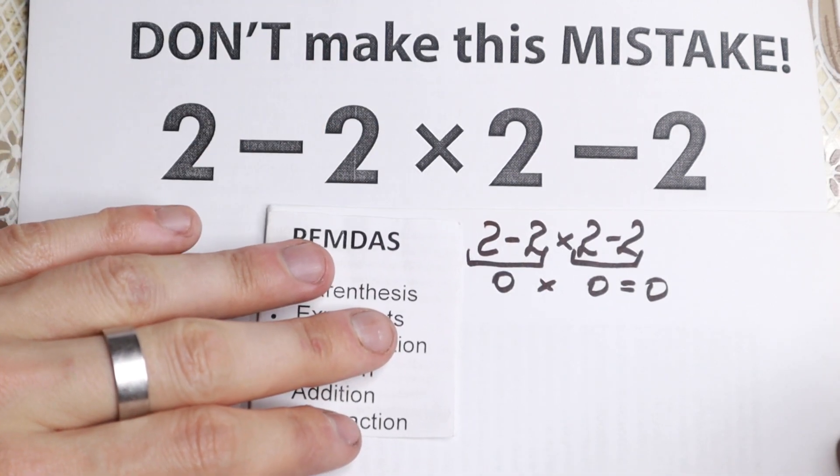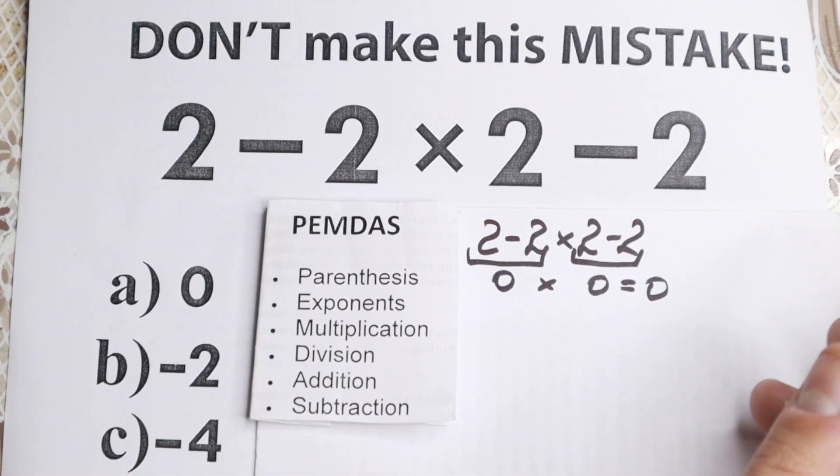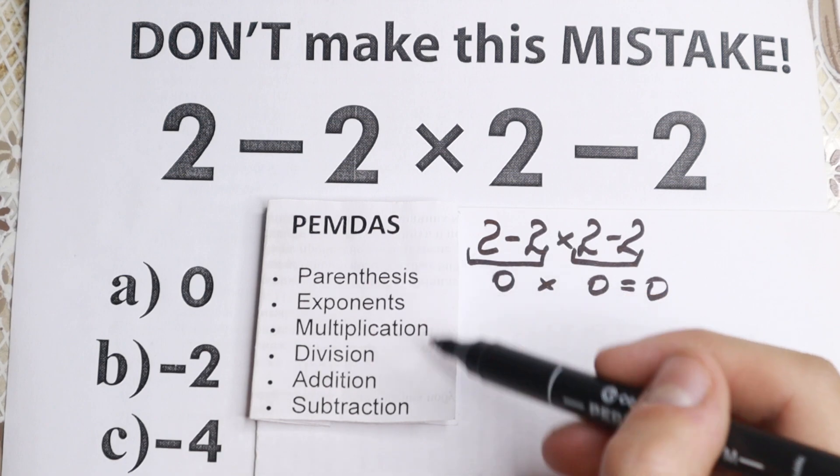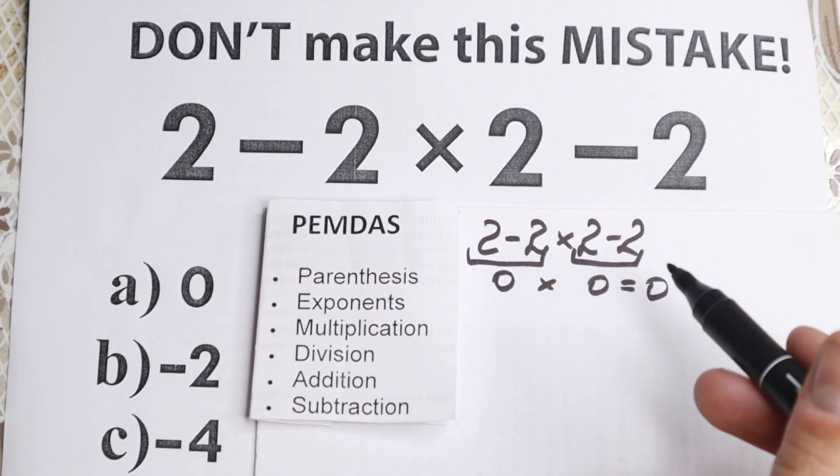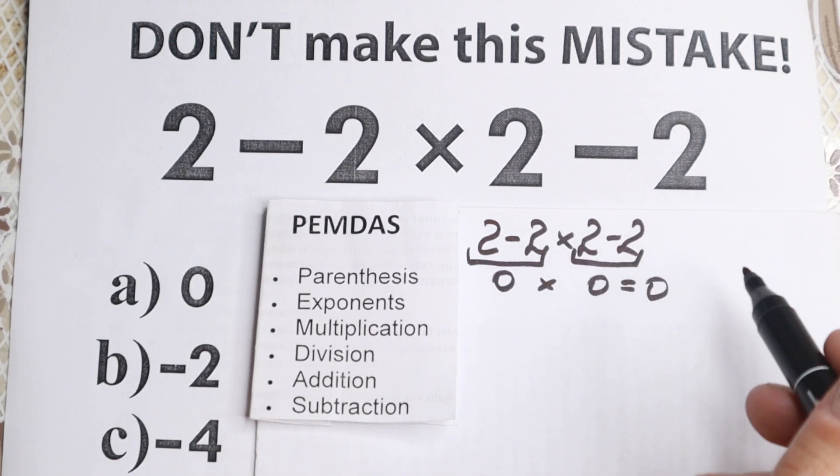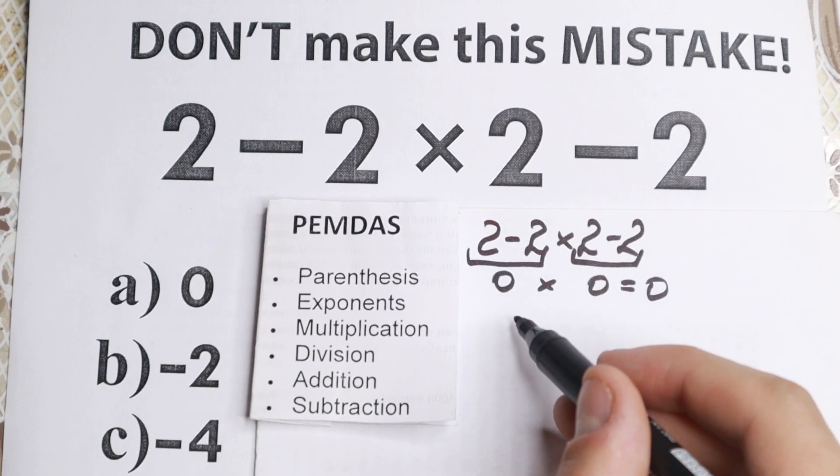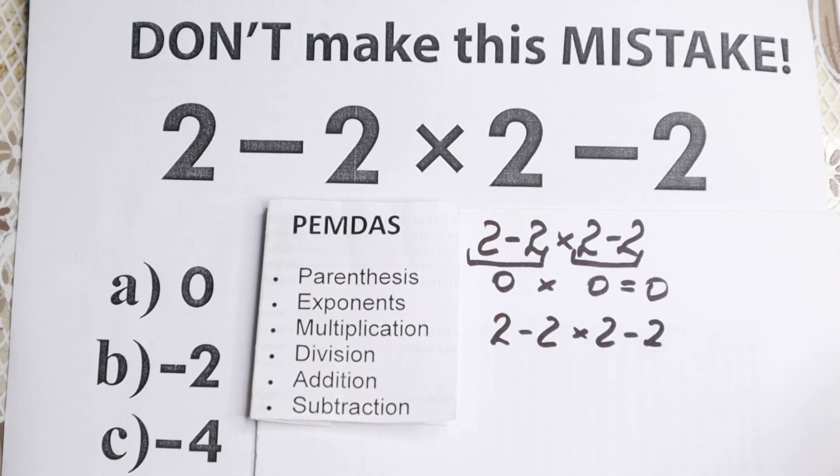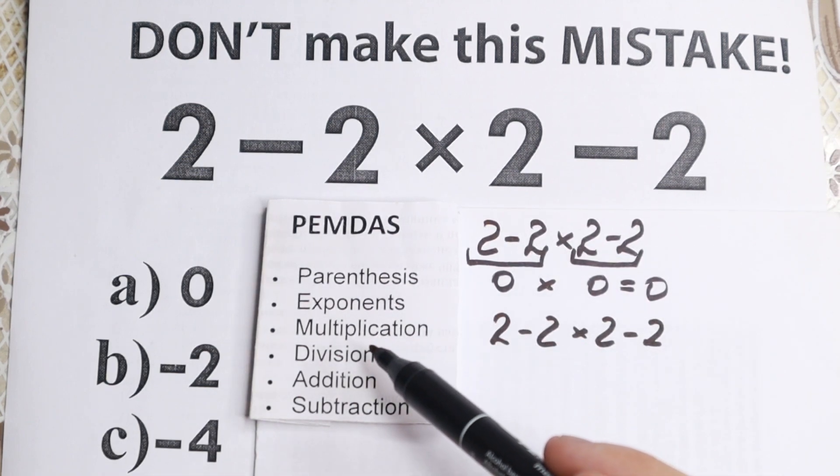So right here we have PEMDAS order, this is the main popular order in the world, the most scientific calculators, graphing calculators, work according to this PEMDAS order. So let's look at this order and let's try to solve it step by step. So I re-read this problem once more, so 2 minus 2 times 2 minus 2. So here is the problem, what is the first step according to this order?